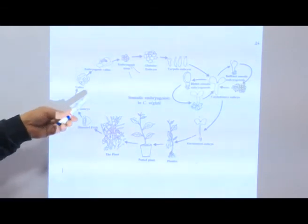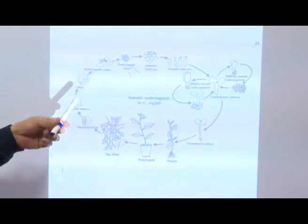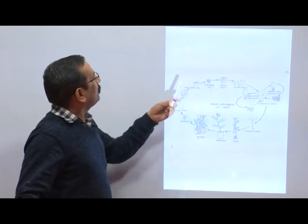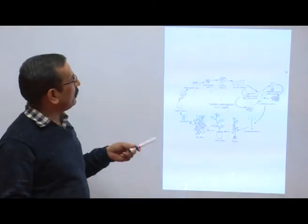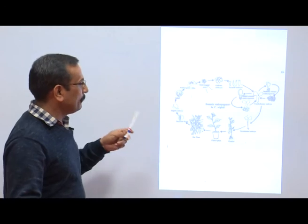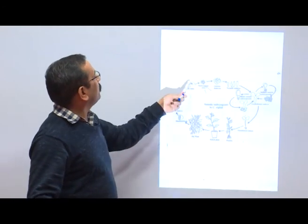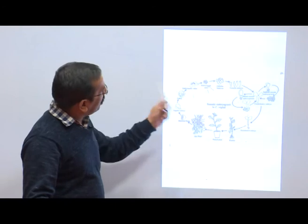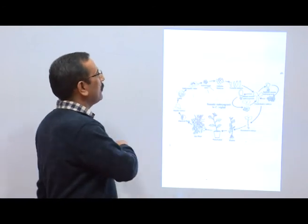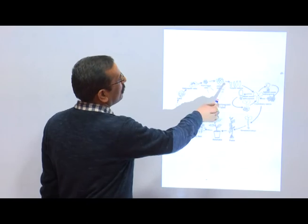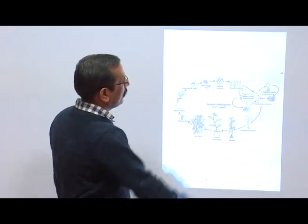Callus is the undifferentiated mass of meristematic tissue. After four to five weeks, the callus changes to induced somatic embryogenesis — the embryogenic callus. This embryogenic callus patch develops into embryo stages just like in previous slides: globular stage, torpedo stage, and cotyledon stage.